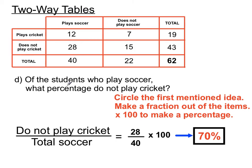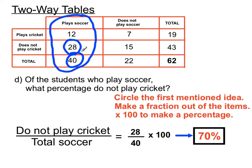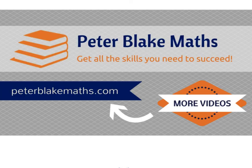Let me recap the steps. For any trickier question on two-way tables: circle the first idea they're talking about, then identify the second idea and get a pair of numbers to turn into a fraction. If asked for a percent, multiply by 100. Understand what different numbers represent, get totals, and draw all over the question paper in a test to focus on just the numbers you're asked about. That's all about two-way tables — I hope that helps. See you next time at PeterBlakeMath.com.